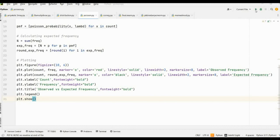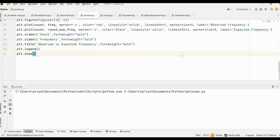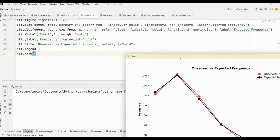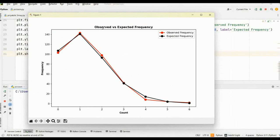Now, we will run the code. Here, you can see, this is the figure of observed versus expected frequency. The red line is observed frequency and the black line is expected frequency. In the x-axis, this is the count, and in the y-axis, this is the frequency.